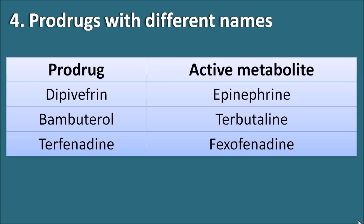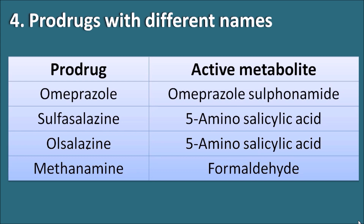Dipivefrin is a prodrug of epinephrine — epinephrine can be used directly or as the prodrug dipivefrin. Bambuterol has the metabolite terbutaline. Terfenadine was a prodrug of fexofenadine; however, terfenadine has been withdrawn from the market because it increases the QT interval on the ECG, which can precipitate the fatal arrhythmia torsades de pointes. Surprisingly, its active metabolite fexofenadine has no such side effect and is used as an anti-allergic agent.